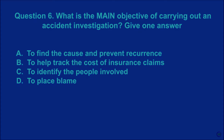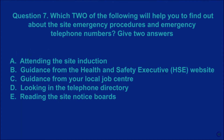Question 6: What is the main objective of carrying out an accident investigation? Give one answer. A: to find the cause and prevent recurrence. B: to help track the cost of insurance claims. C: to identify the people involved. D: to place blame. The correct answer is A.